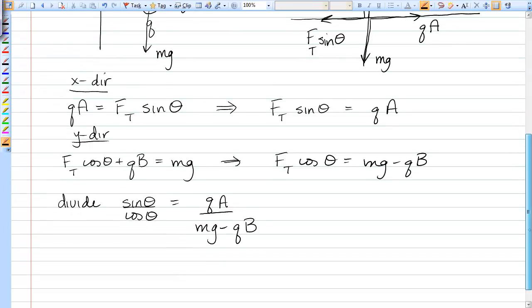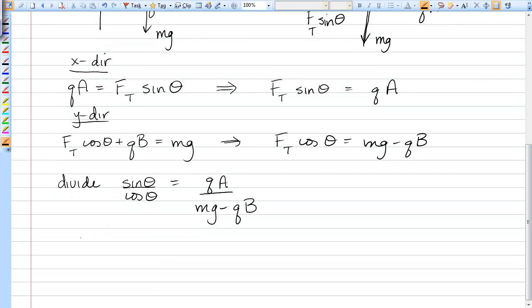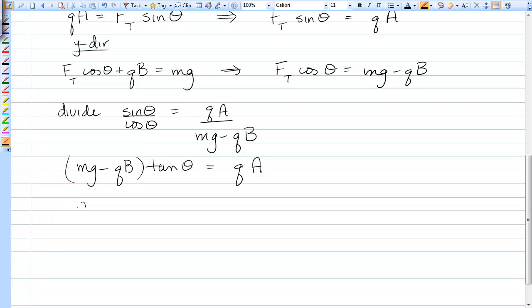And this allows me now to solve for Q. So I would have mg minus QB all times tangent theta is equal to QA. Now I can factor out this Q. I'll have a B tangent theta and an A of the same sign, and then the mg is on the other side of the equation. And so writing the expression for Q, I get mg divided by B tangent theta plus A.